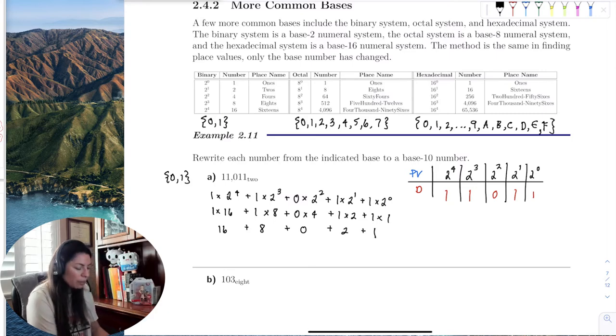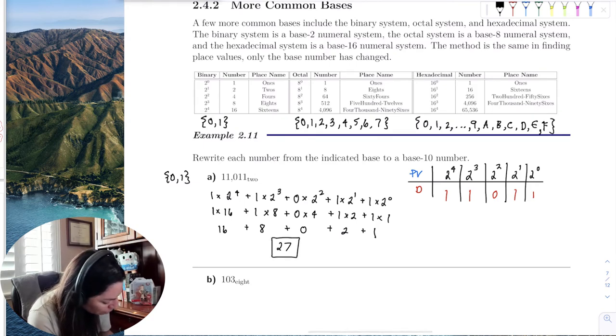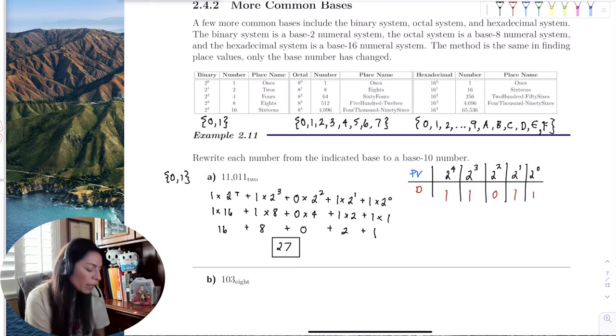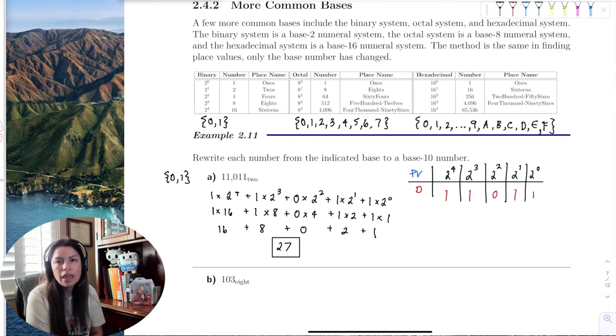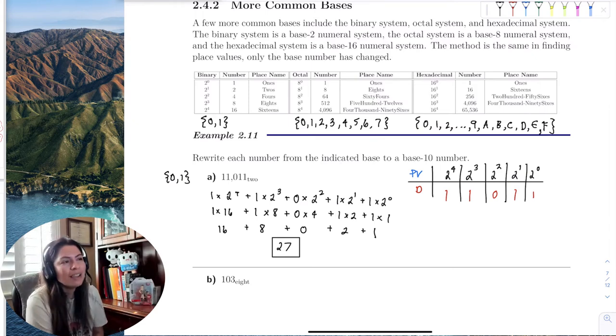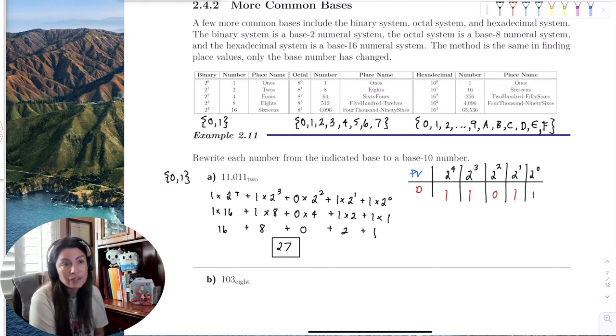Adding this up, I get 16 plus 8 which is 24, then 25, 26, 27. How does something so large like 11,011 become a little number like 27? Well, think about it. There are more groups of 2 that fit into 11,011 than base 10. Base 10 is a much larger group, so less groups of 10 will fit into this number. That's why the base 10 number is smaller - because less groups can fit into it.